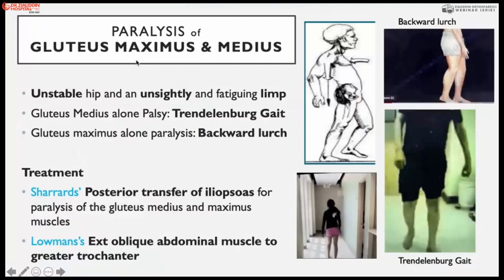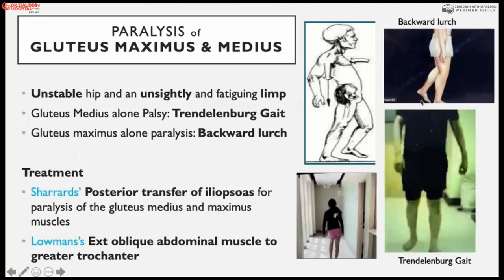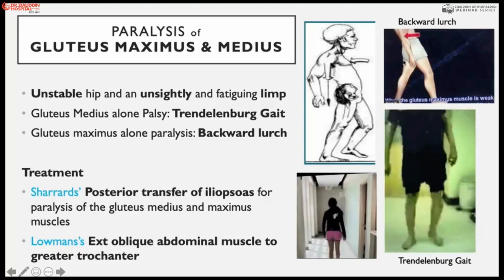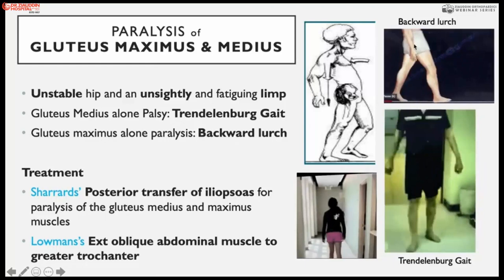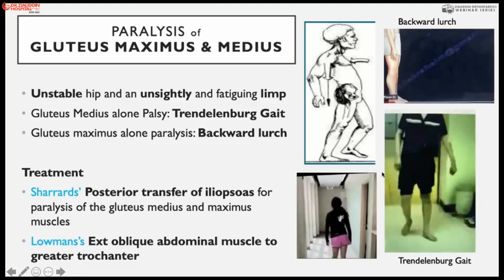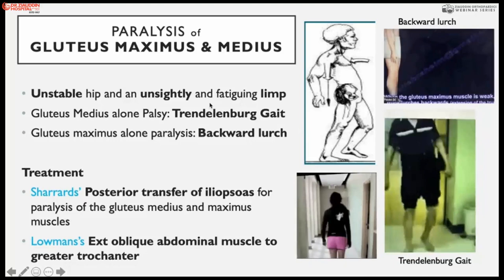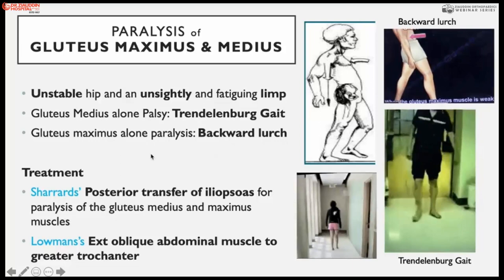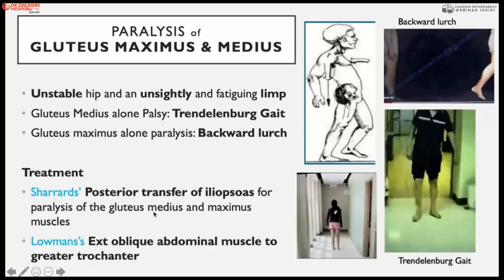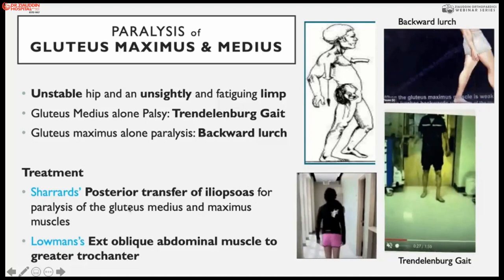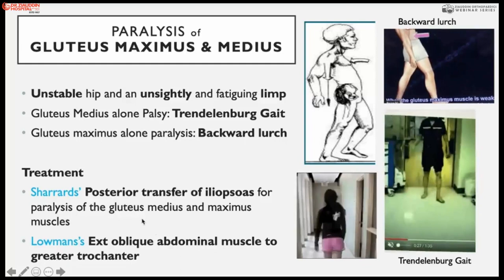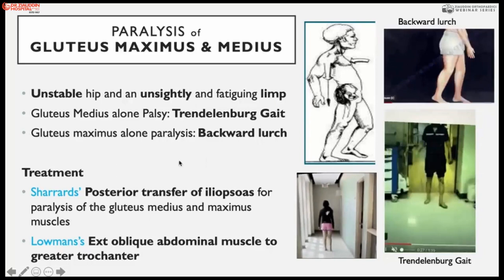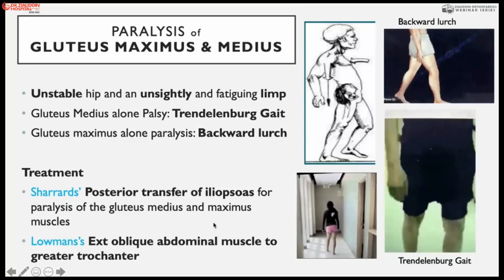Paralysis of gluteus maximus produces a backward trunk lurch to compensate. Gluteus medius paralysis produces the Trendelenburg gait and pelvic lurch. The operation for these is mostly transfer of the iliopsoas tendon to the greater trochanter to compensate for gluteus medius and maximus weakness, and sometimes the external oblique muscle is also transferred. This is why when examining the limb, abdominal muscle power must also be checked, as external oblique transfer may be needed to compensate for the Trendelenburg lurch.